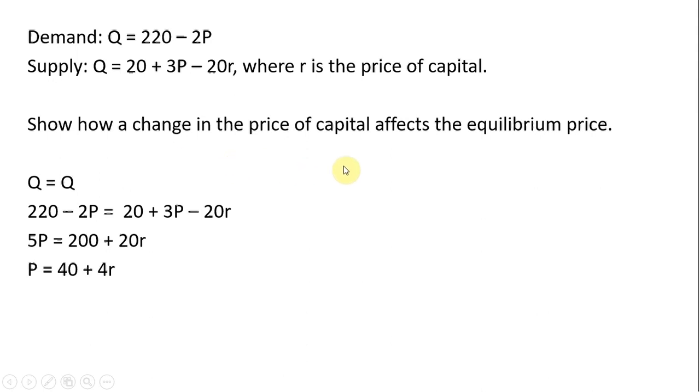Now to find how a change in the price of capital affects the equilibrium price, we'll take a derivative of this price equation with respect to r, the price of capital, and we get 4. So a 1 unit increase in the price of capital, or if the price of capital goes up by $1, the equilibrium price will increase by $4.